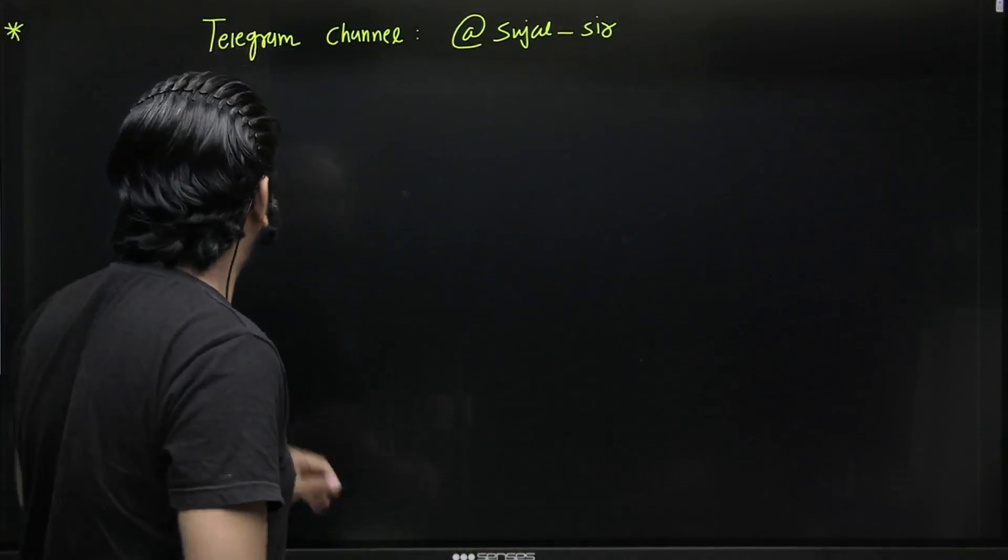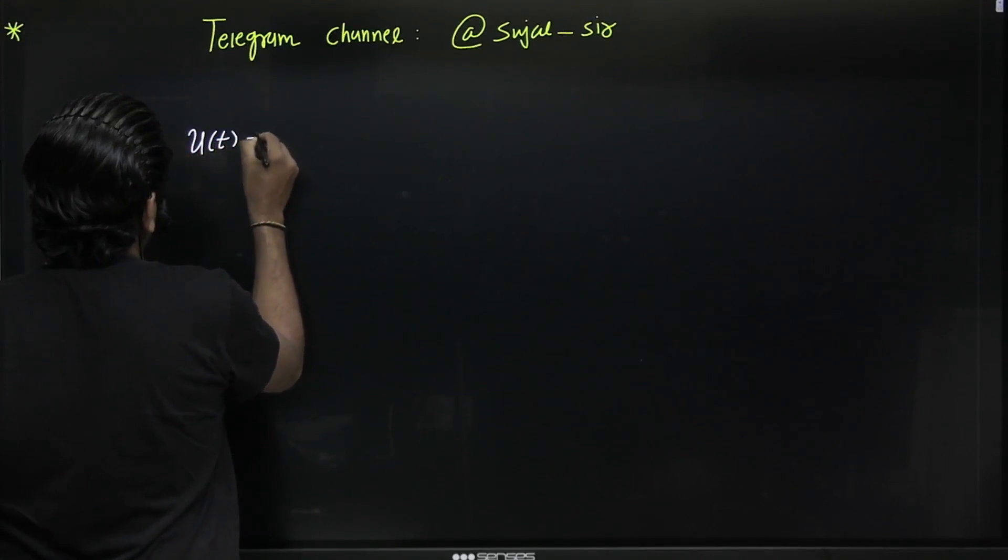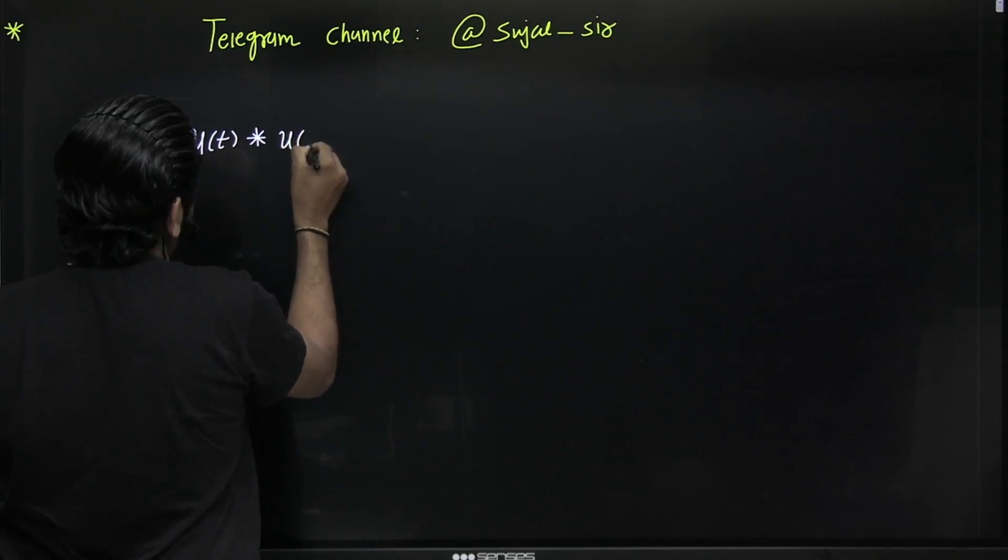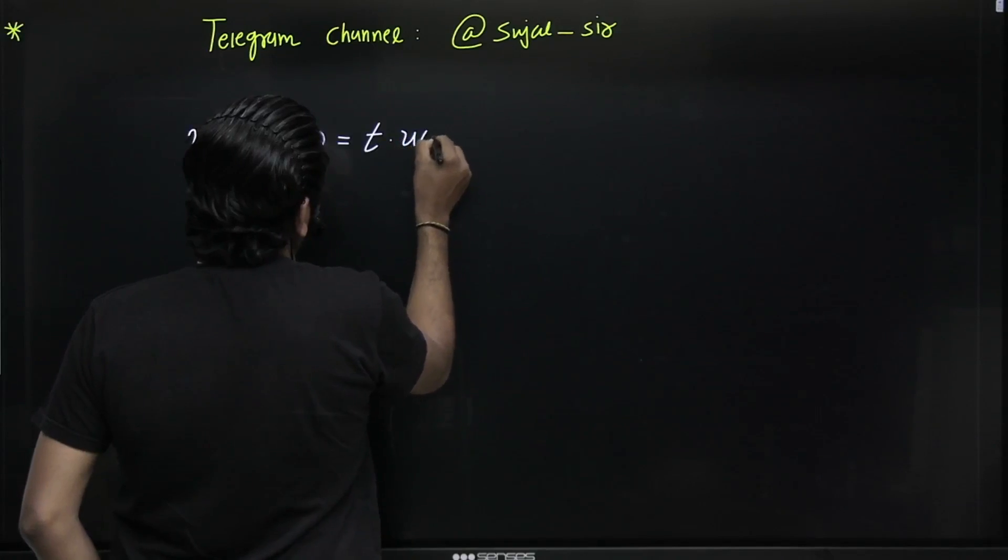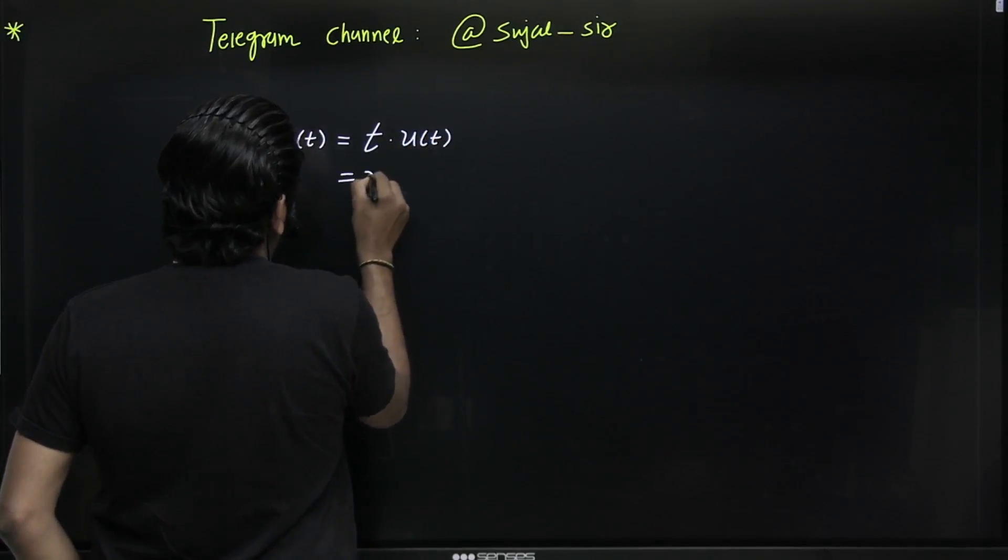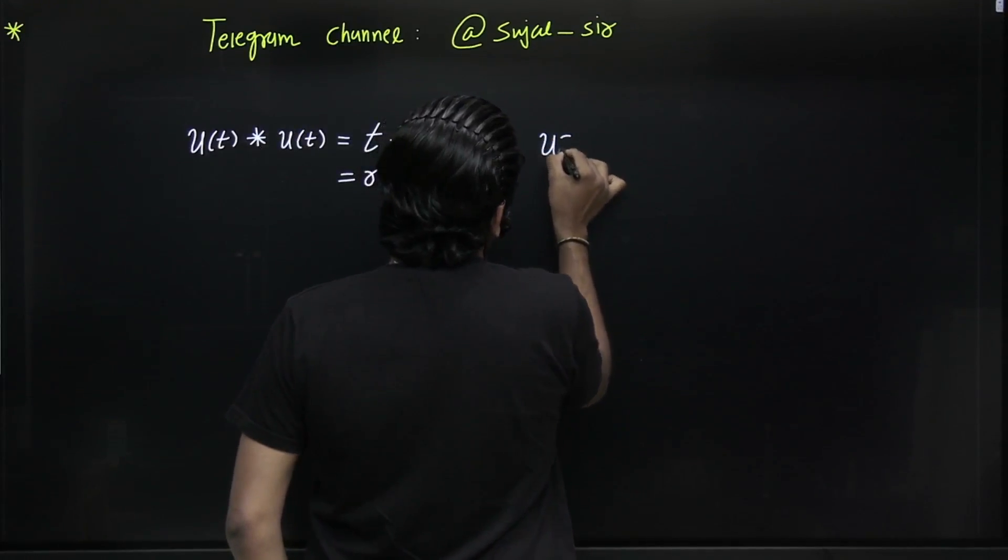Convolution between unit step functions in continuous time: u(t) * u(t) = t·u(t), which is r(t). But in discrete time,